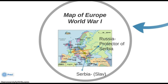Italy had signed an alliance with Germany and Austria-Hungary, although it was a defensive alliance. The Italians eventually broke that alliance and joined Britain, France, and Russia. The United States will also join Britain, France, and Russia down the road. Germany and Austria-Hungary were called the Central Powers because they occupy the central part of the European map.